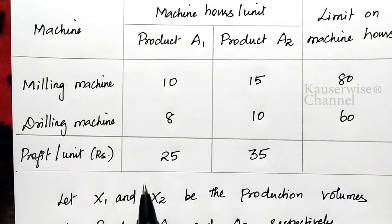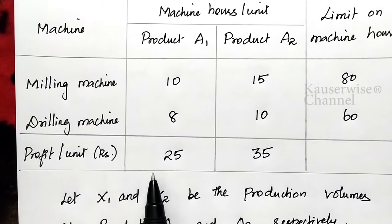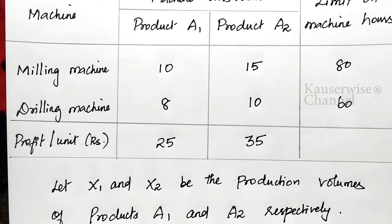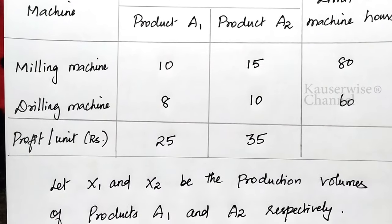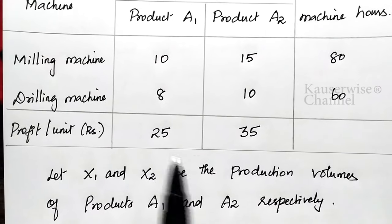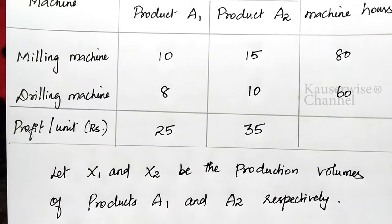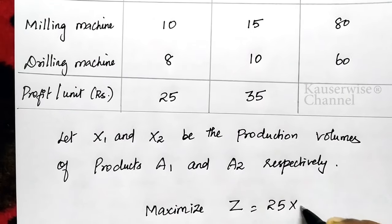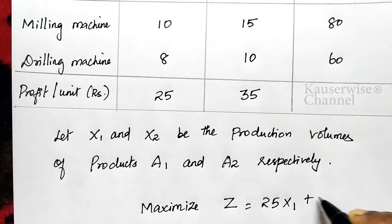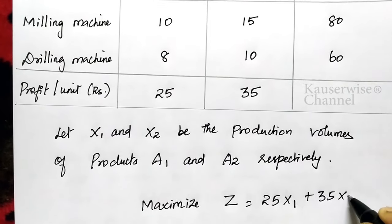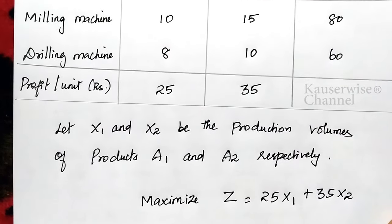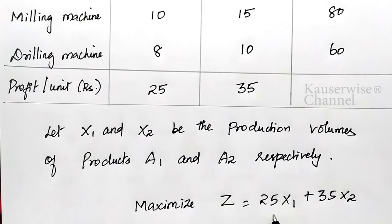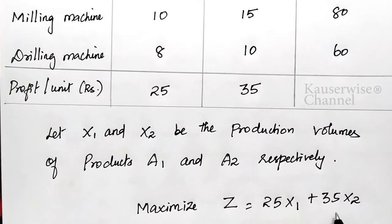We don't know how many number of product A1 and A2 to produce to gain maximum profit, so the number of products can be X1 and X2. Therefore, Maximize Z = 25X1 + 35X2. This is our objective function.